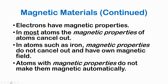So electrons have magnetic properties. In most atoms, the magnetic properties of atoms cancel themselves out. In atoms such as iron, magnetic properties do not cancel out and have their own magnetic field — we're talking about that individual atom. So that iron, that cobalt, that nickel, they'll behave in this way.